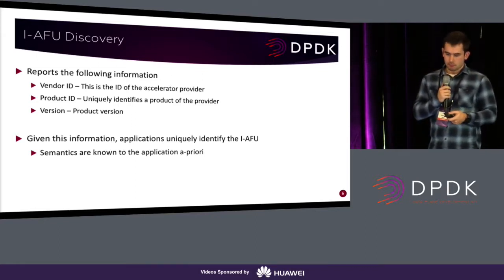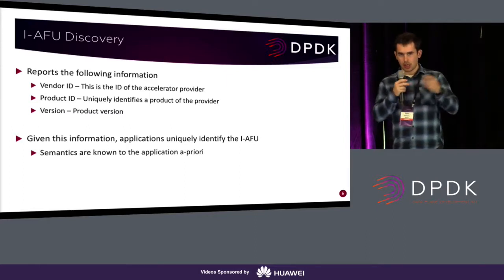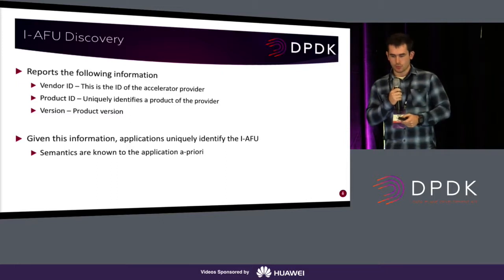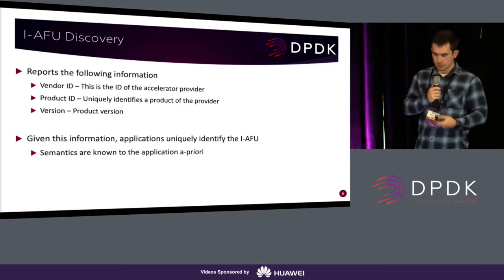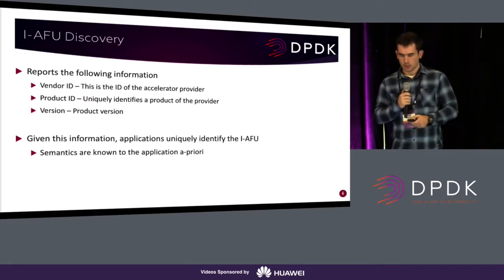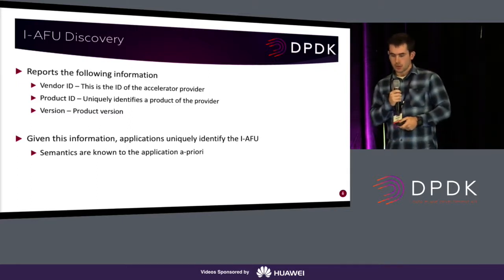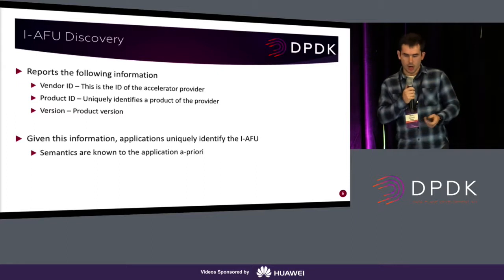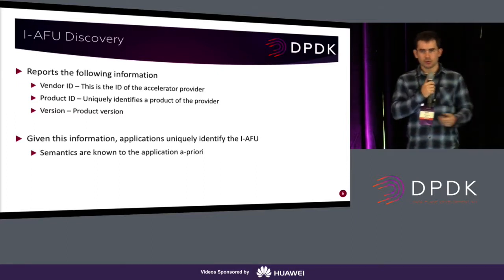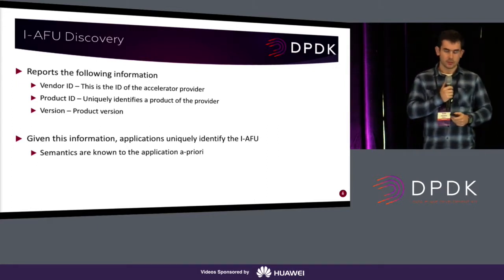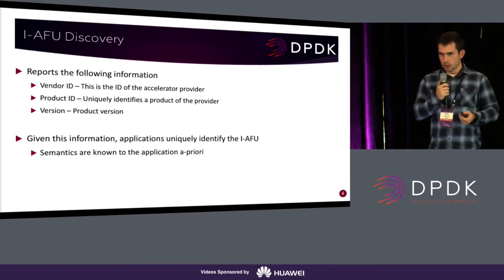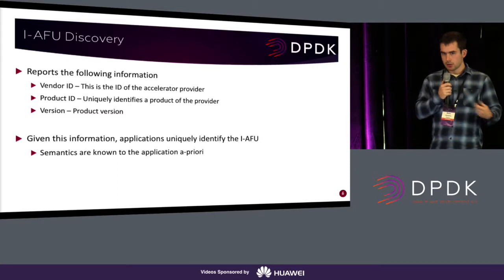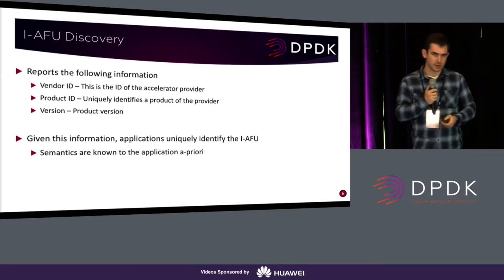Regarding AFU discovery — this is an example of how it might look, not a concrete suggestion. In general, every accelerator should provide a vendor ID, which may differ from the NIC vendor ID providing the acceleration, a product ID since there may be many different products per vendor, and a version of the product. Given this information, the application can uniquely identify the accelerator. However, the semantics are known to the application a priori — we're not assuming any specific predefined semantics for acceleration, since there could be many possibilities and many will eventually be defined by specific APIs.